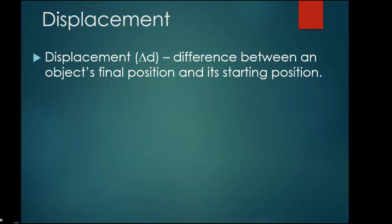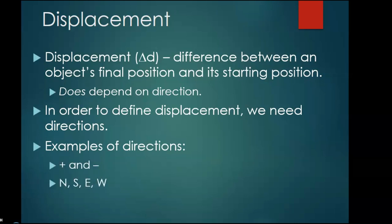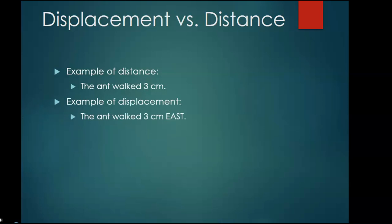Displacement is the difference between an object's final position and its starting position, and it does depend on direction. In order to define displacement, we need directions. Examples of directions we can use are positive and negative, north, south, east, west, going to school, going to the supermarket. Example of distance: the ant walked three centimeters. Example of displacement: the ant walked three centimeters east. Notice that the displacement has a direction.